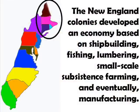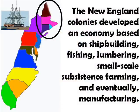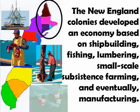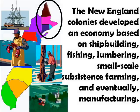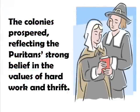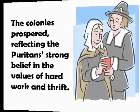The New England colonies developed an economy based on shipbuilding, fishing, lumbering, small-scale subsistence farming, and eventually manufacturing. The colonies prospered, reflecting the Puritans' strong belief in the values of hard work and thrift.